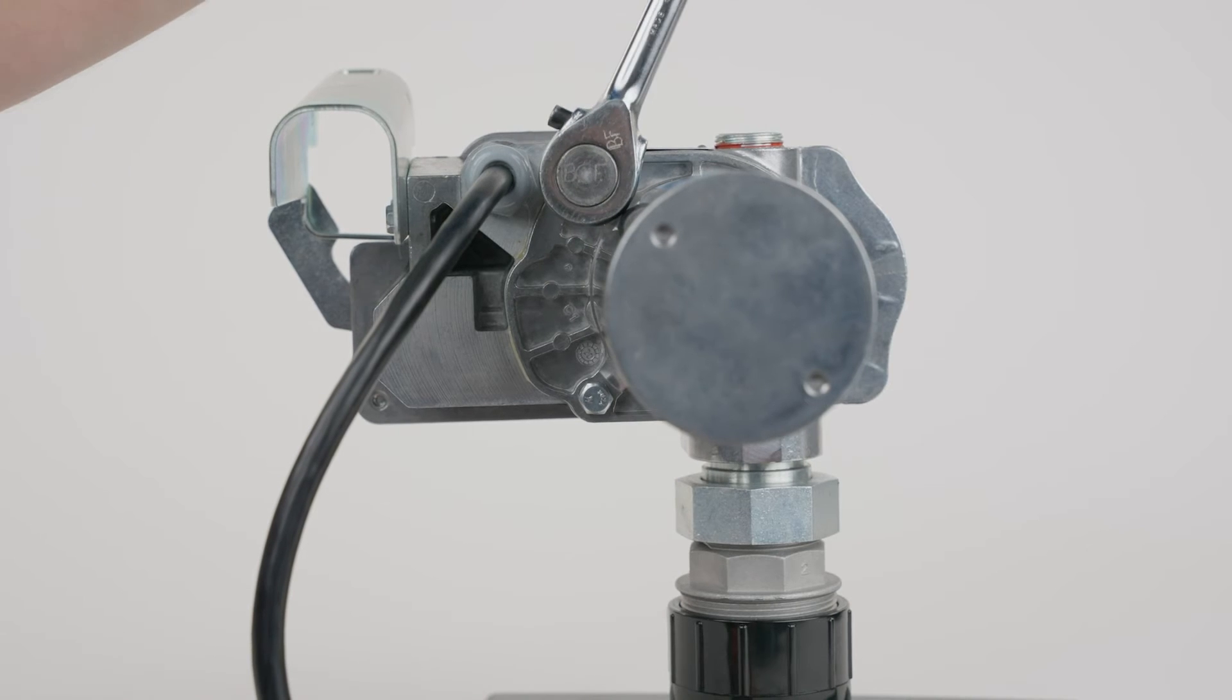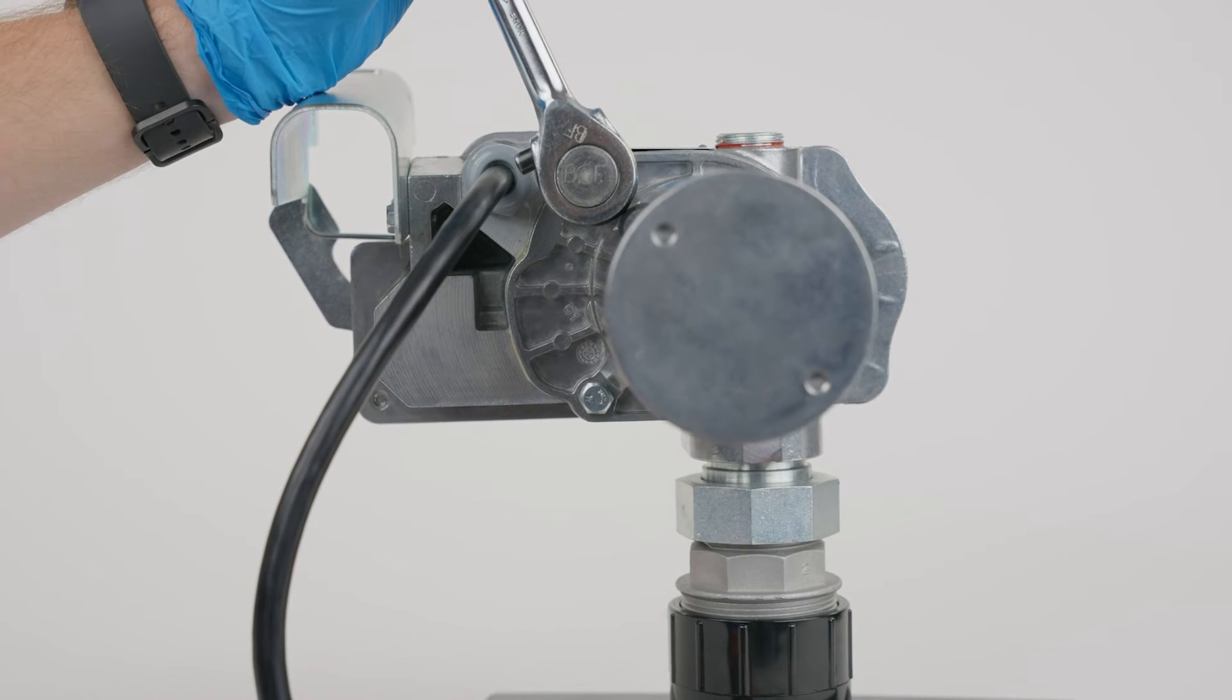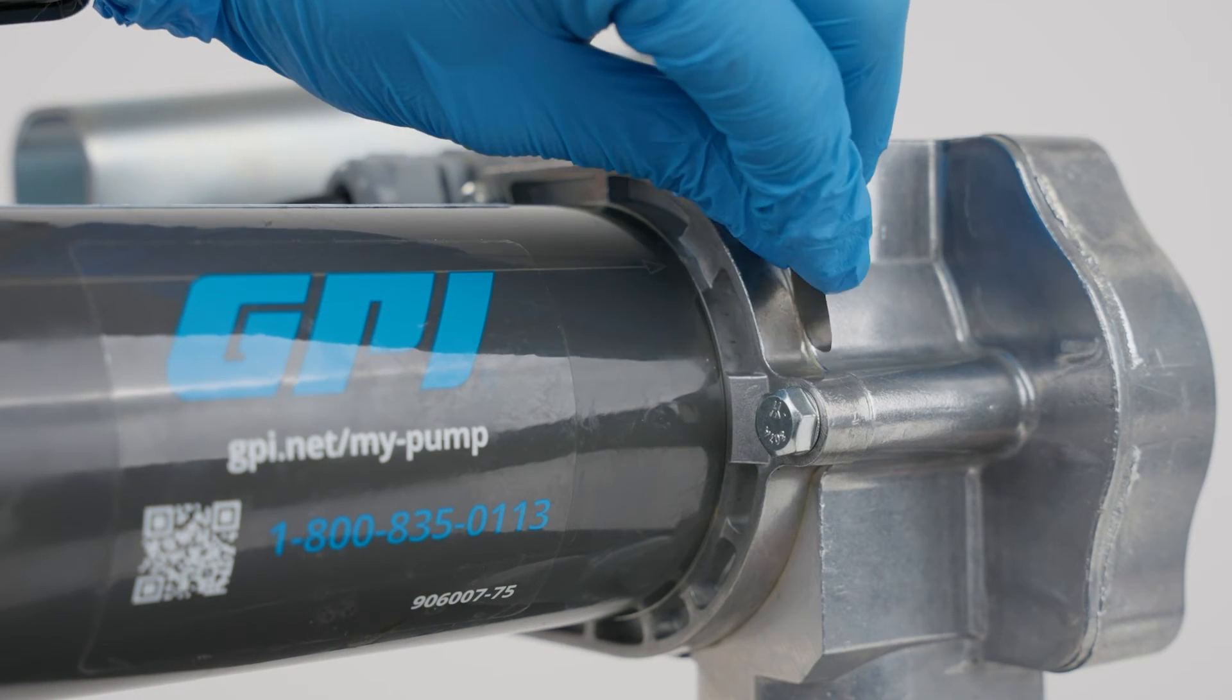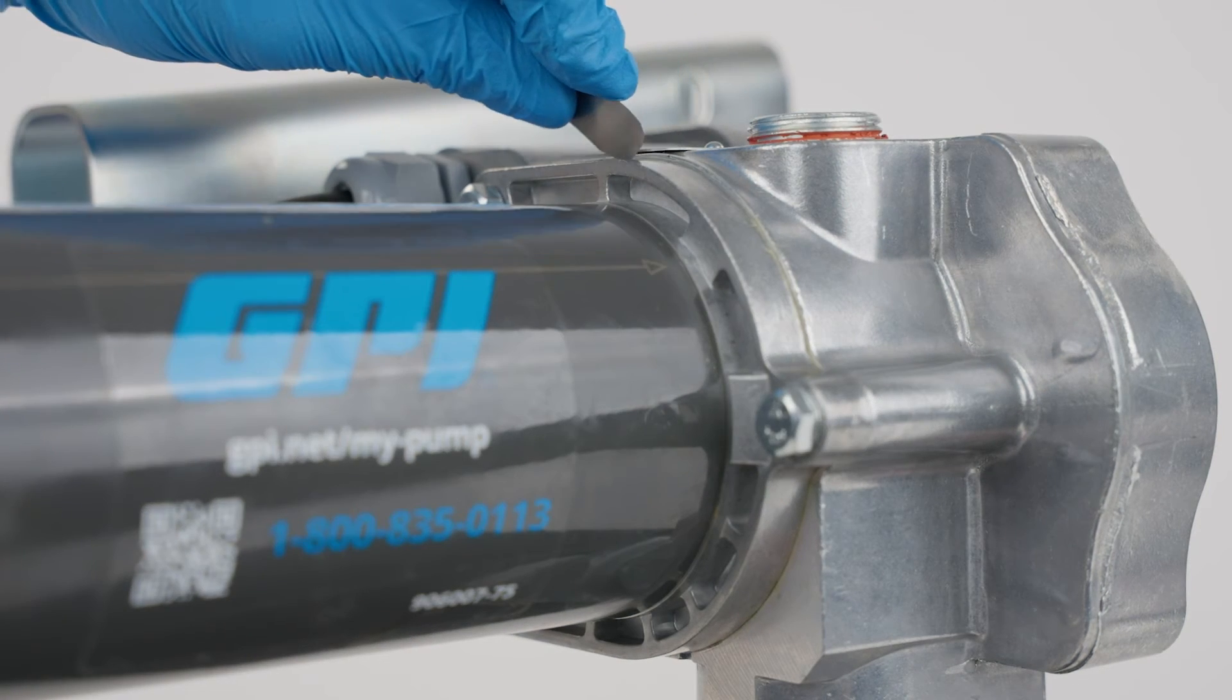Check for proper installation by working a 15 10-thousandths inch feeler gauge around the motor flange. The gauge should not fit between the flange and the housing.